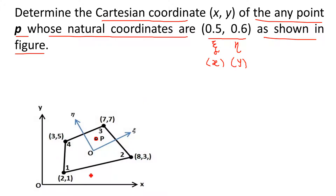One quadrilateral is given in the Cartesian coordinate system with node numbers 1, 2, 3, 4. The Cartesian coordinates of the nodes are given: node 1 is (2, 1), node 2 is (8, 3), node 3 is (7, 7), and node 4 is (3, 5).